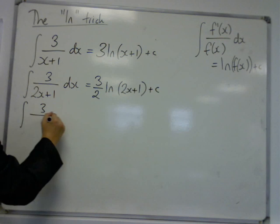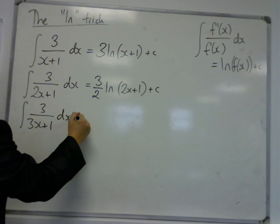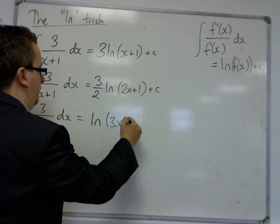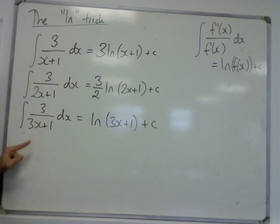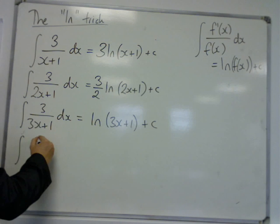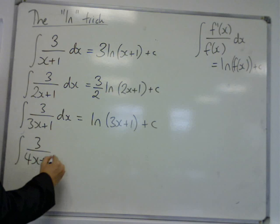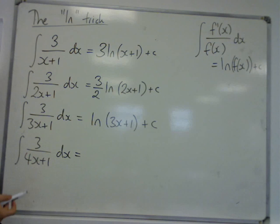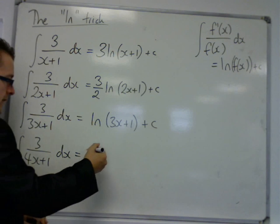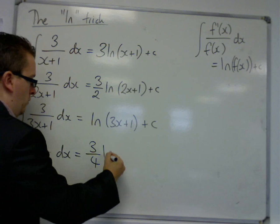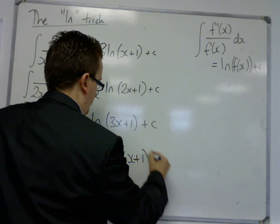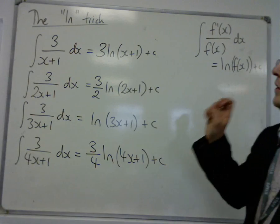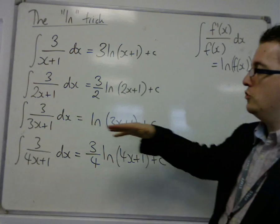If I had the integral of 3 over (3x + 1), the derivative of what's on the bottom is 3, which is the same as what I've got on the top, so this would just be log of (3x + 1). Then if I had 3 over (4x + 1), the derivative of what's on the bottom is 4. I've got 3, so in actual fact I've got three-quarters of what I want. This is how you can manipulate using this log trick.